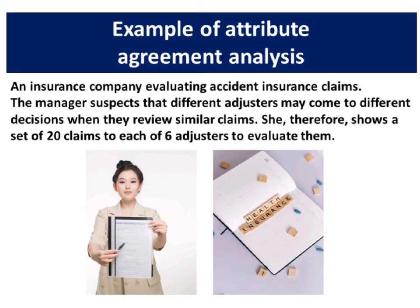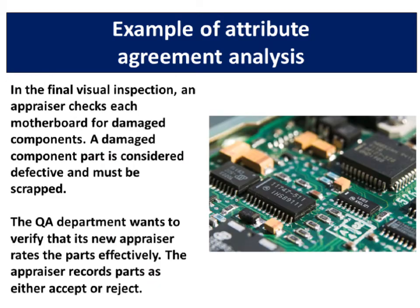An example of attribute agreement analysis: an insurance company evaluating accident insurance claims. The manager suspects that different adjusters may come to different decisions when they review similar claims. She therefore shows a set of 20 claims to each of six adjusters to evaluate them. Another example is in final visual inspection, where an appraiser checks each motherboard for damaged components. A damaged component part is considered defective and must be scrapped. The QA department wants to verify that its new appraiser rates the parts effectively. The appraiser records parts as either accept or reject.